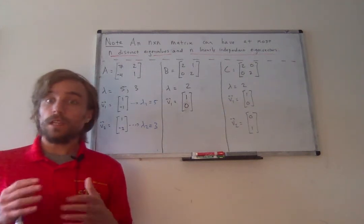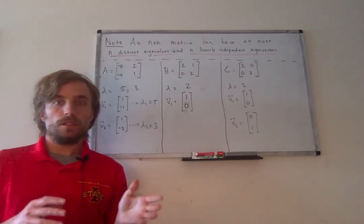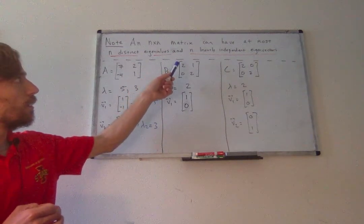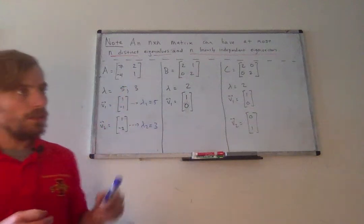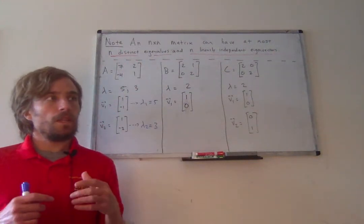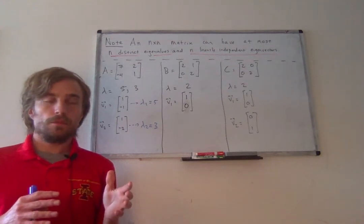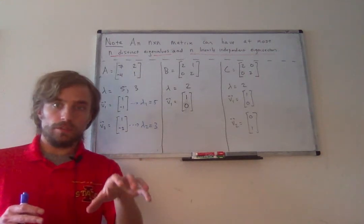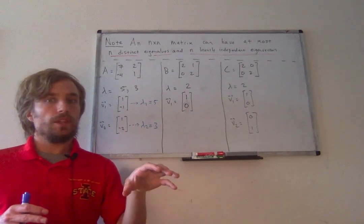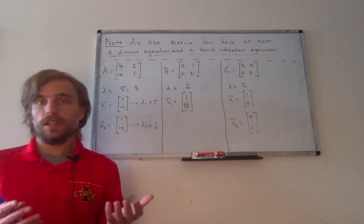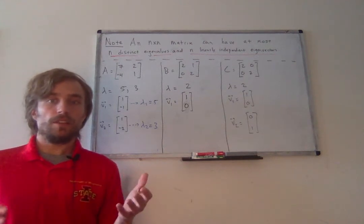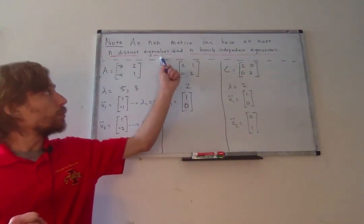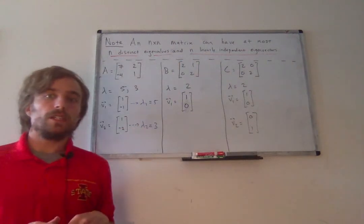For that reason, any matrix A can have at most n linearly independent eigenvectors. That also implies the eigenvalue part of the statement: each distinct eigenvalue must be associated with one linearly independent distinct eigenvector. So if you had more than n distinct eigenvalues — say n plus one — you would certainly then have n plus one linearly independent eigenvectors, and that's not possible. So you can have at most n distinct eigenvalues and at most n linearly independent eigenvectors.